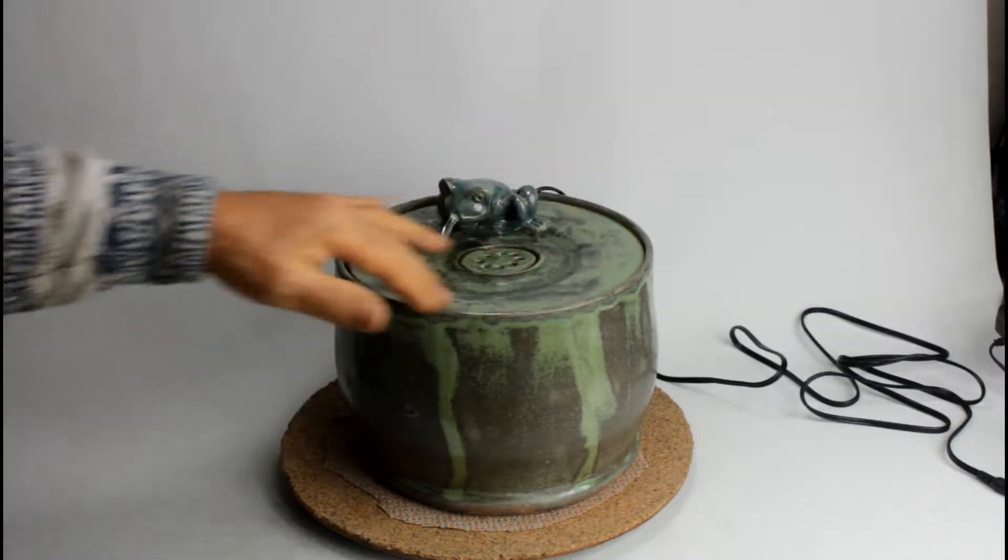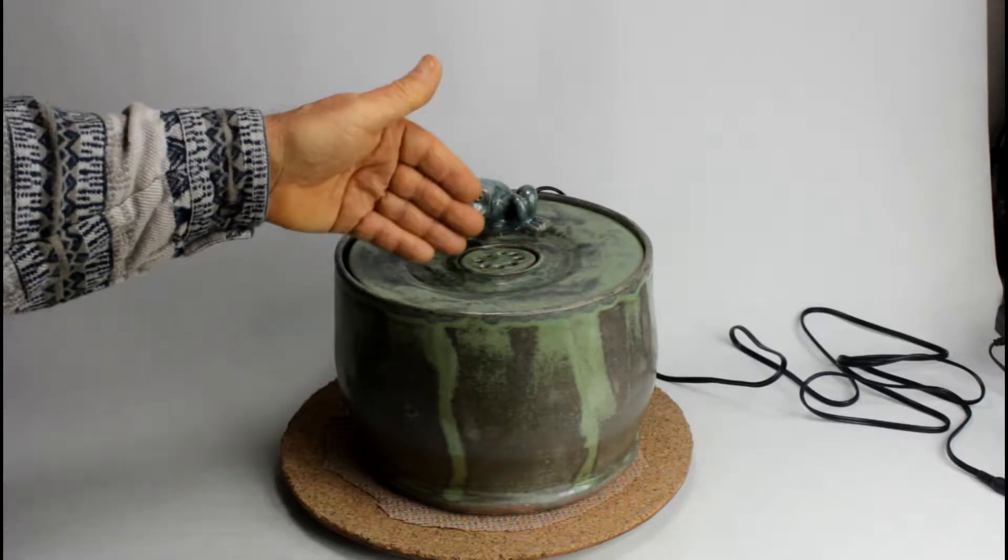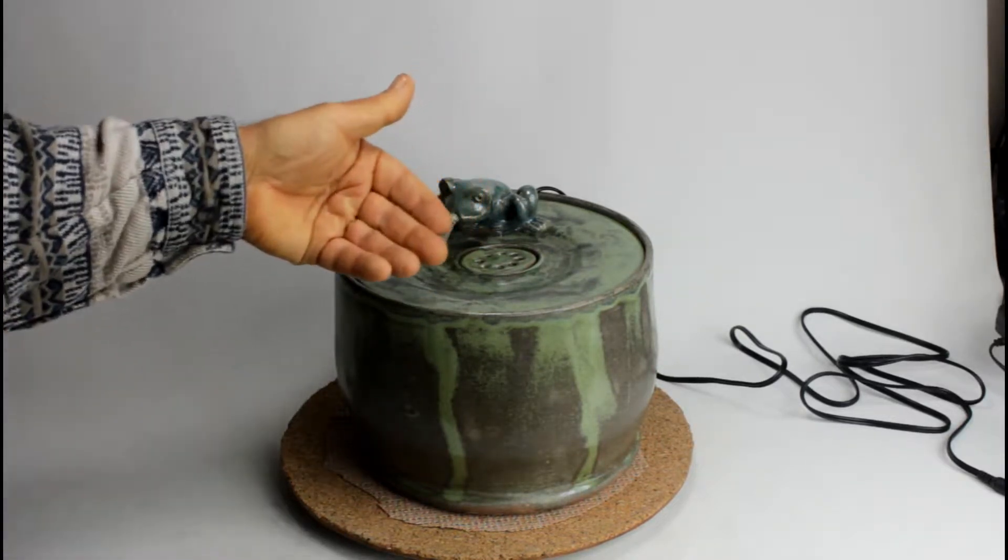When you have a big water wing, a big water area, it's easier for the cat to scoop the water out.